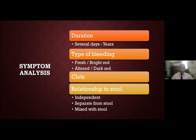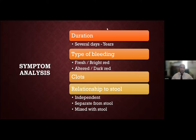Next, ask about clots. For clots to develop, blood can't mix with stool — so if you're seeing clots, it's generally in a part of the colon where stool is already solid. You're thinking a left colonic lesion or a rectal lesion, or the bowel was empty at the time of bleeding. Generally it doesn't happen with right-sided lesions; it is often a left-sided lesion.